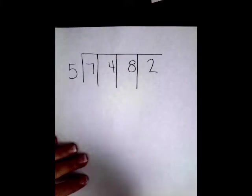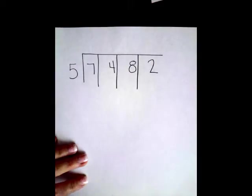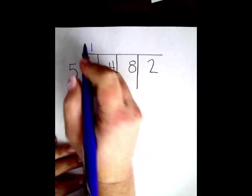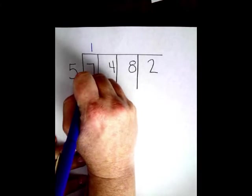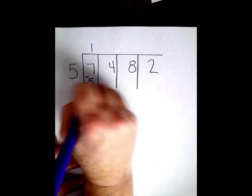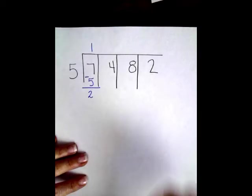Let's start here. 5 goes into 7 one time. 1 times 5 is 5. I'm going to subtract. I have 2 left over.